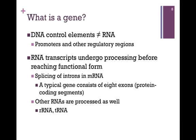We also want to acknowledge that RNA transcripts undergo processing before they reach their final functional form. In eukaryotic systems this involves the splicing of introns in a message. A typical gene consists of about eight exons, or protein-coding segments, and we'll look at the process of splicing in a later lesson. Keep in mind that other RNA molecules are processed as well, including rRNA and tRNA.